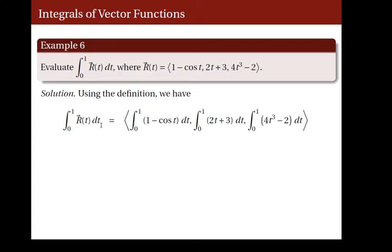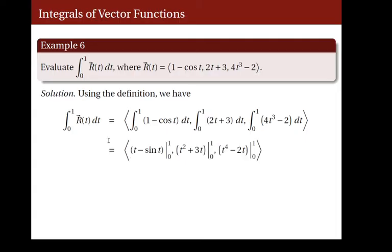The integral of r of t dt from 0 to 1 is given by the vector-valued function whose coordinates are the given integrals. For the first coordinate, we need to integrate 1 minus cosine of t. The integral of 1 is t, and the integral of cosine of t is sine t. So for the first coordinate, we need to evaluate the function t minus sine t from 0 to 1.